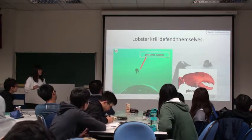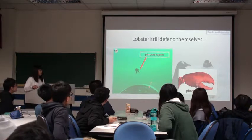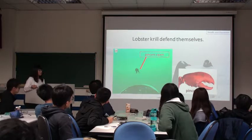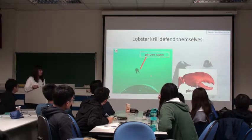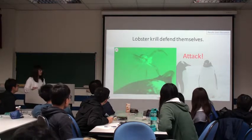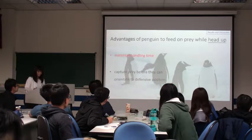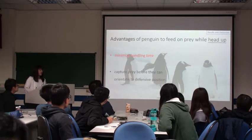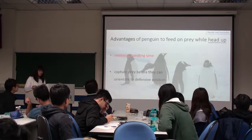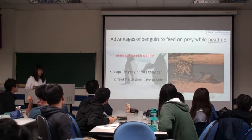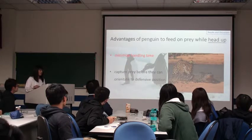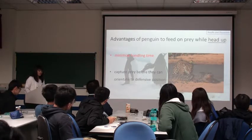The reason is because krill can defend themselves. This is a picture of the penguin swimming toward the krill, and the krill opens its pincers. Open pincers mean the krill is in a defensive position. This is a picture of the krill attacking the penguin. The fact that the penguin feeds with its head up means the penguin attacks the prey from below. Just imagine you want to attack somebody quickly — you would like to minimize the time for them to turn into a defensive position. It is the same idea for the penguin and krill.